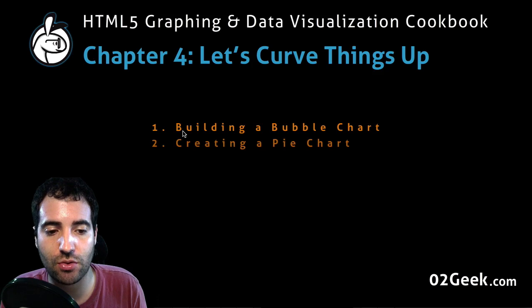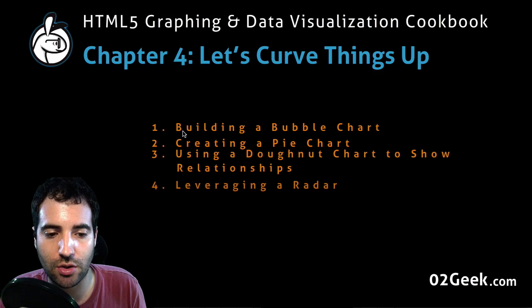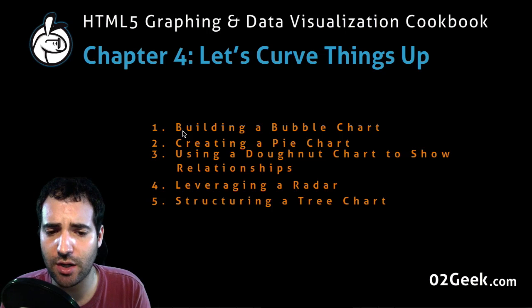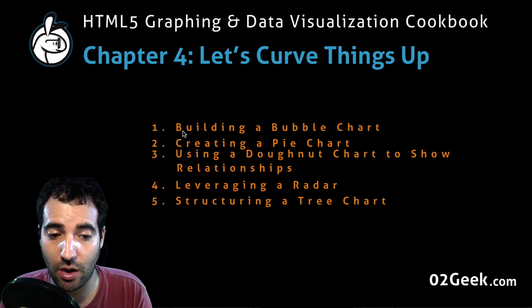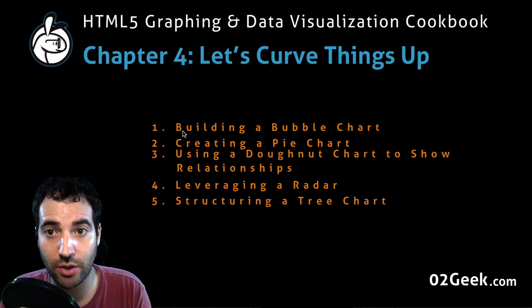So what are we going to get in this chapter? There are a few recipes: the bubble chart, pie chart, donut chart, radar chart, and also a tree chart. It's quite a lot of charts and quite a lot of things that we are going to do in this chapter.